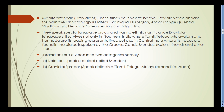Mediterranean Dravidians are believed to be of the Dravidian race. They are found in the Chota Nagpur Plateau, Rajmahal Hills, Aravalli Ranges, Central Vindhyas, and Deccan Plateau regions including the Nilgiri Hills. They speak special language groups. Dravidian languages survive not only in South India — where Tamil, Telugu, Malayalam, and Kannada are leading representatives — but also in Central India, spoken by the Oraons, Gonds, Mundas, Malis, Konds, and other tribes.